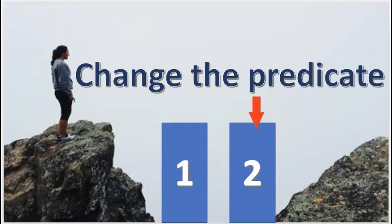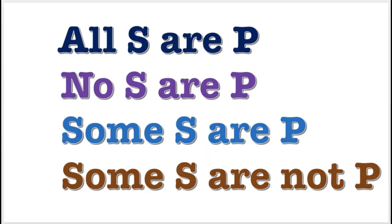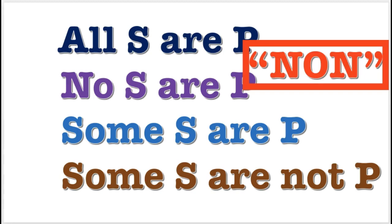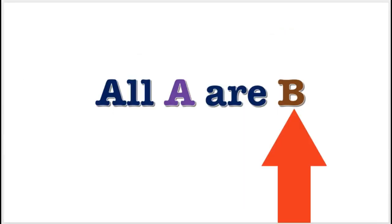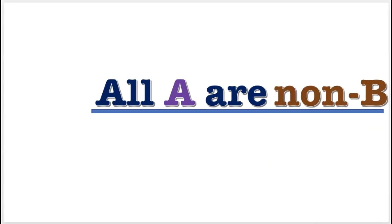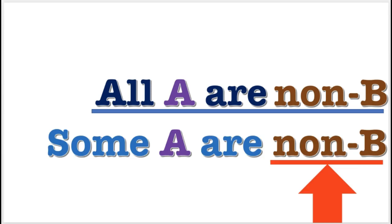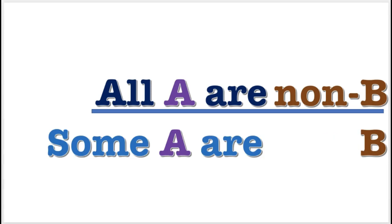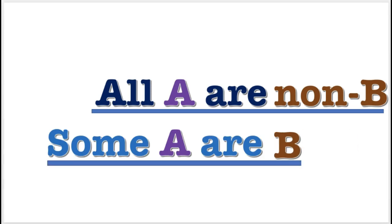When it comes to changing the predicate term to its complement, for simple predicates, we'll just insert or delete the prefix 'non.' For example, B will be replaced with non-B, and non-B will be replaced with B.